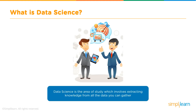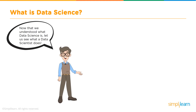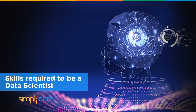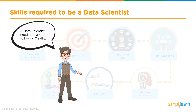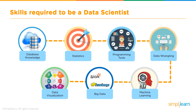Data science is the area of study which involves extracting knowledge from all the data that you can gather. Now that you understand what data science is, let's talk about what a data scientist does. A data scientist needs to have the following seven skills: database knowledge, statistics, programming tools, data wrangling, machine learning, big data, and data visualization.